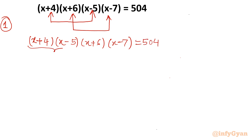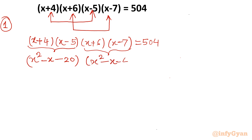Now take the product of these two pairs. If I take the product of the first pair, I get x²-5x+4x-20, giving x²-x-20. For the second pair, I get x²-x-42, equal to 504. This is the advantage of considering these two brackets together — after getting the product, you will have similar terms.